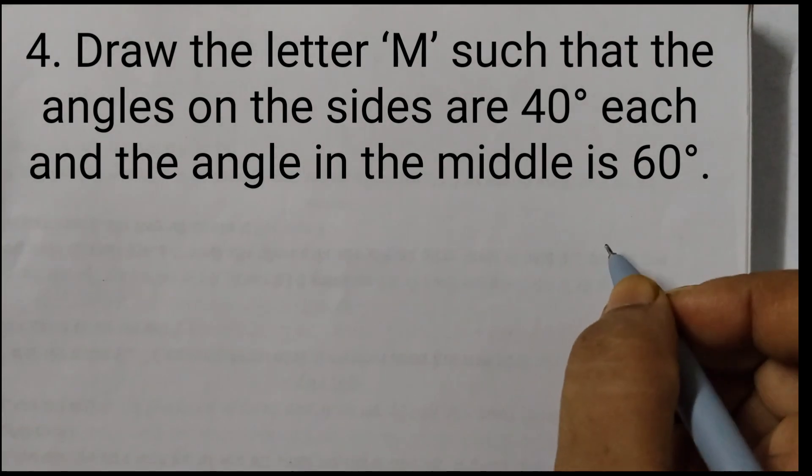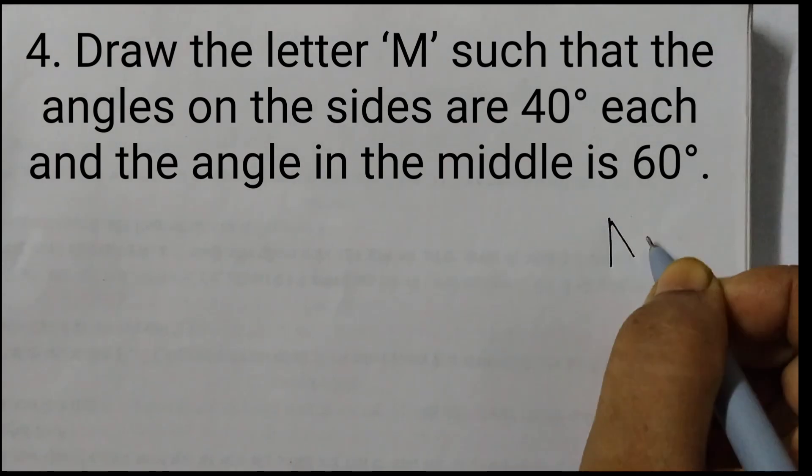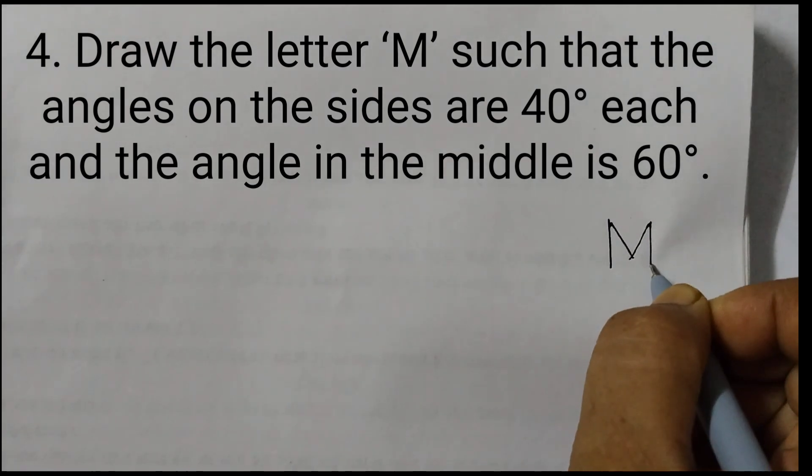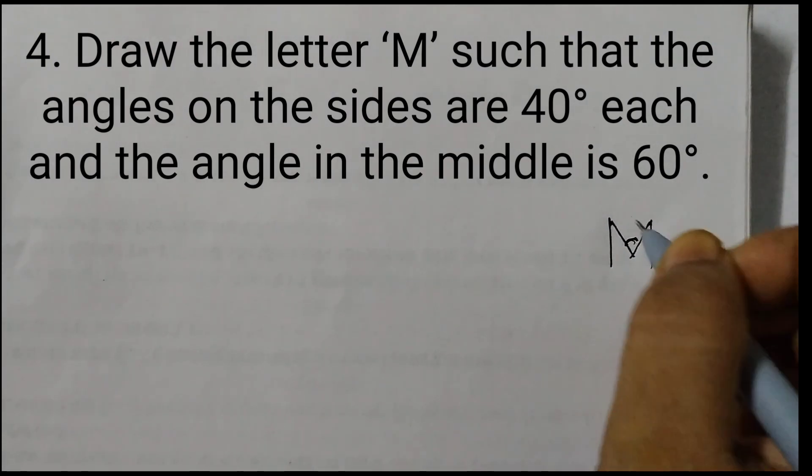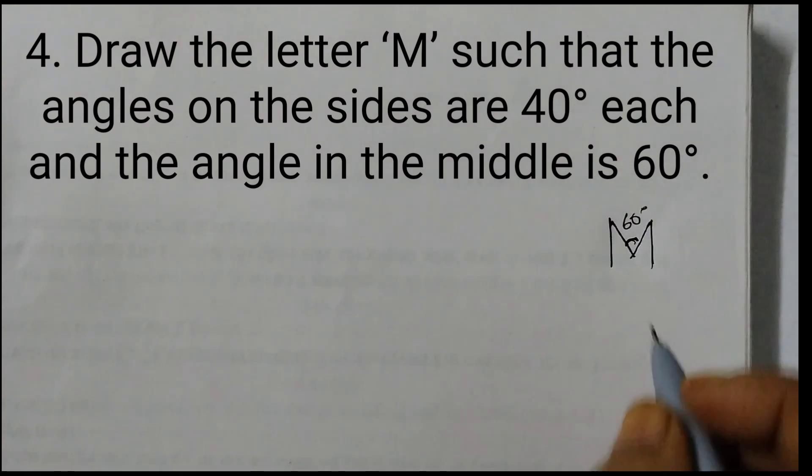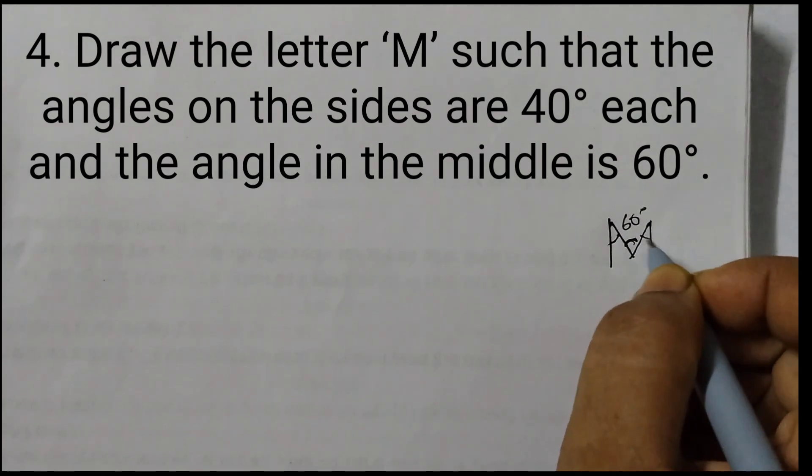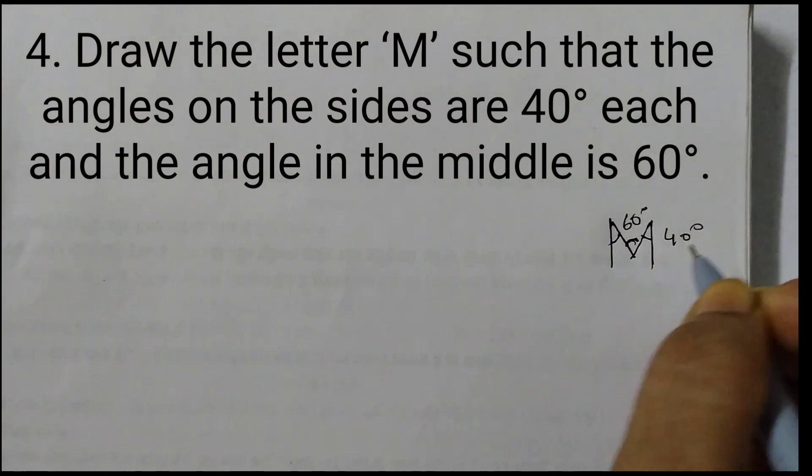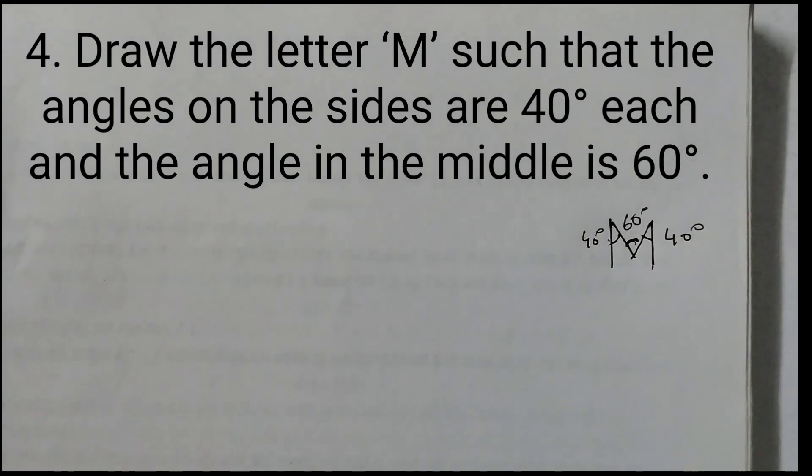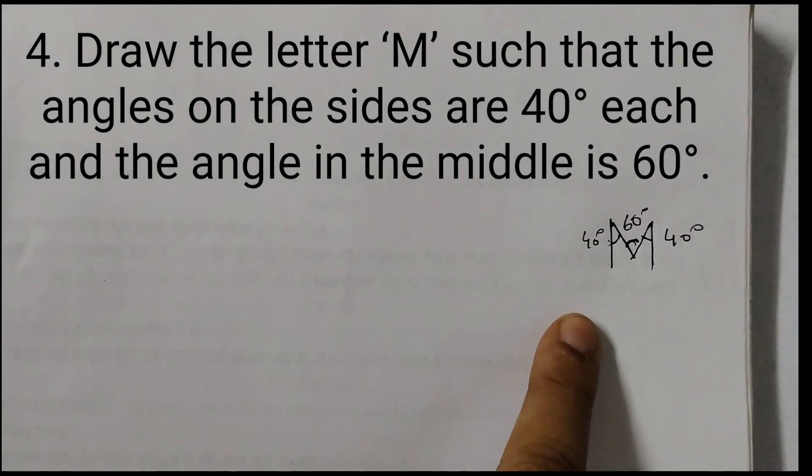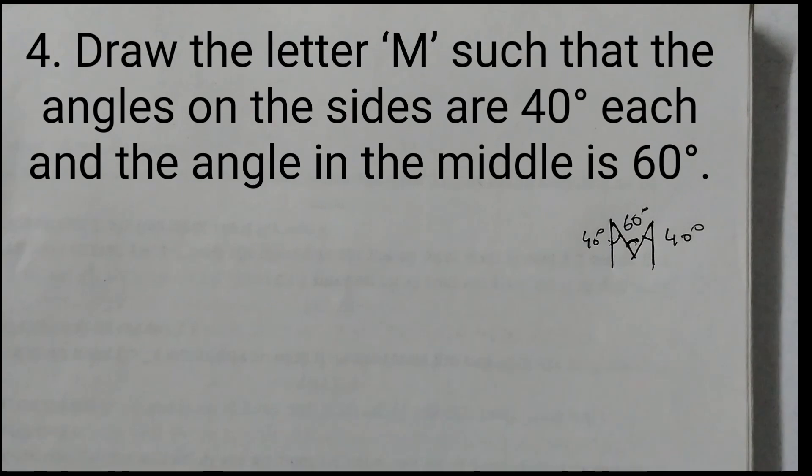So we need to draw the letter M in such a way that this angle here is 60 degrees and these two angles are 40 degrees, this one also 40 and this one also 40 degrees. So this is what we need to draw. For this we need a protractor and a ruler.